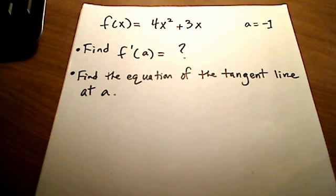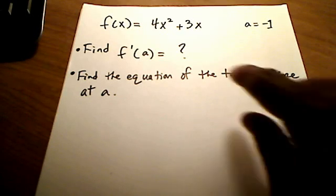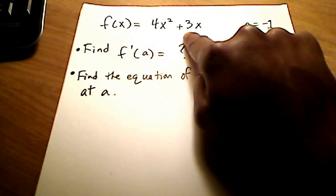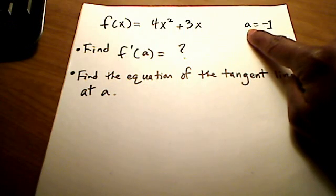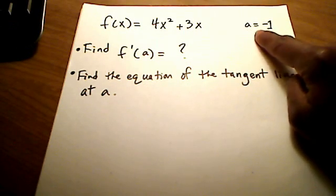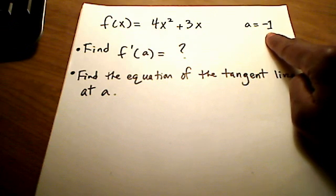Alright, in this video I want to demonstrate a couple of things here. With this given function of 4x squared plus 3x, that's what f of x is equal to, and given that some random variable here, a, is equal to negative 1. So we're also told that a is negative 1.